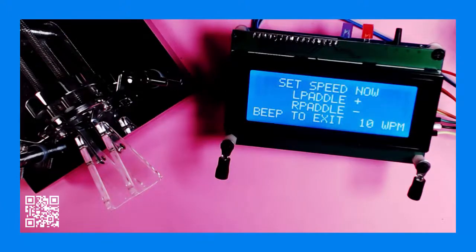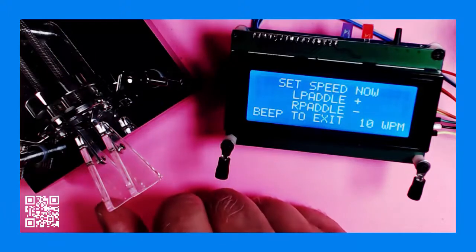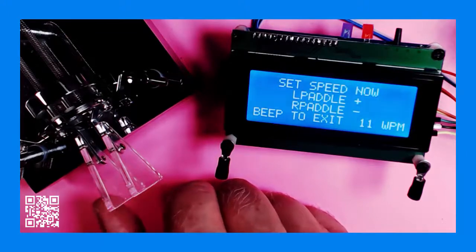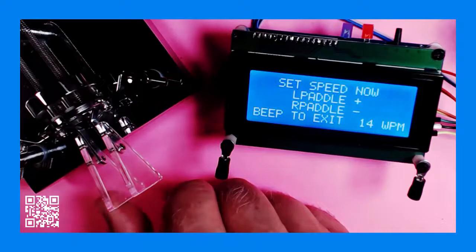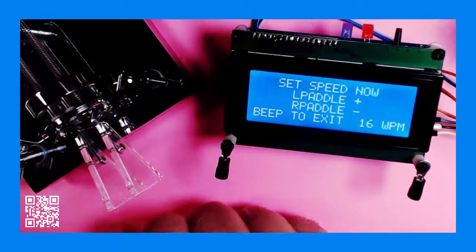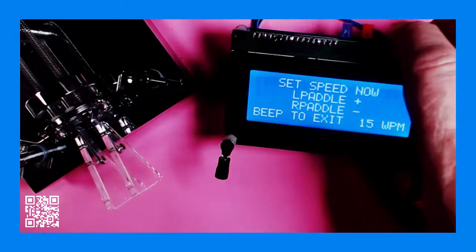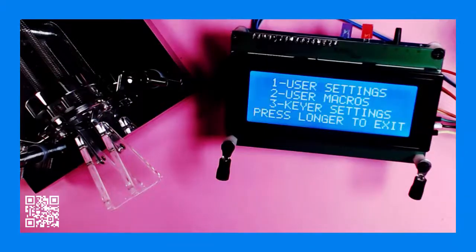The right paddle will bring it down, and again press your function key when you've got it where you want it. You'll be able to change both the frequency of the sidetone and the speed of your keyer anytime you want later. But now we need to take care of a few settings. We need to let Mr.